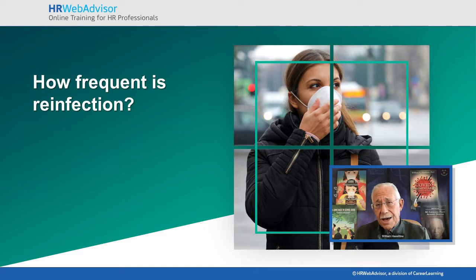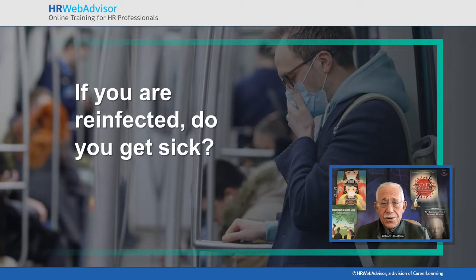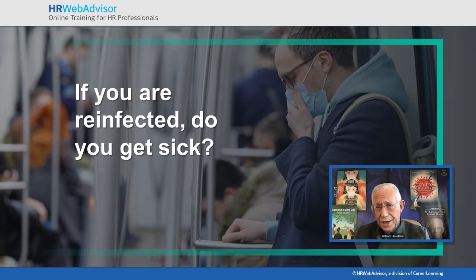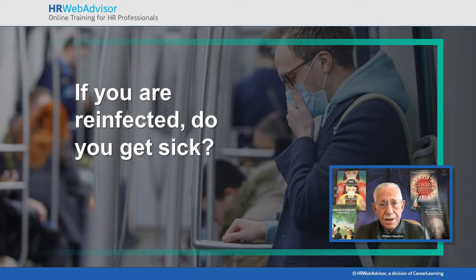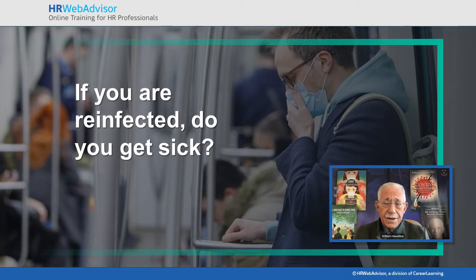The next question in that series would be: if you are reinfected, do you get sick? So far we have a whole series of scenarios. People have been healthy, been reinfected, and stayed healthy — you know that by PCR testing and antibody measurements. Second, you can be sick, reinfected, and apparently be healthy. You can be healthy, reinfected, and become sick. You can be sick and reinfected and get sick again. All four are possible.